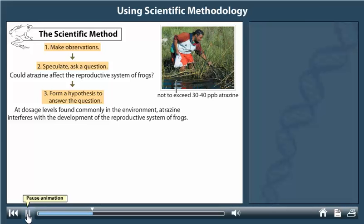If correct, you can imagine the disastrous effect on frog populations. Based on his hypothesis, Tyrone Hayes made a prediction, which is the next step in the scientific method.